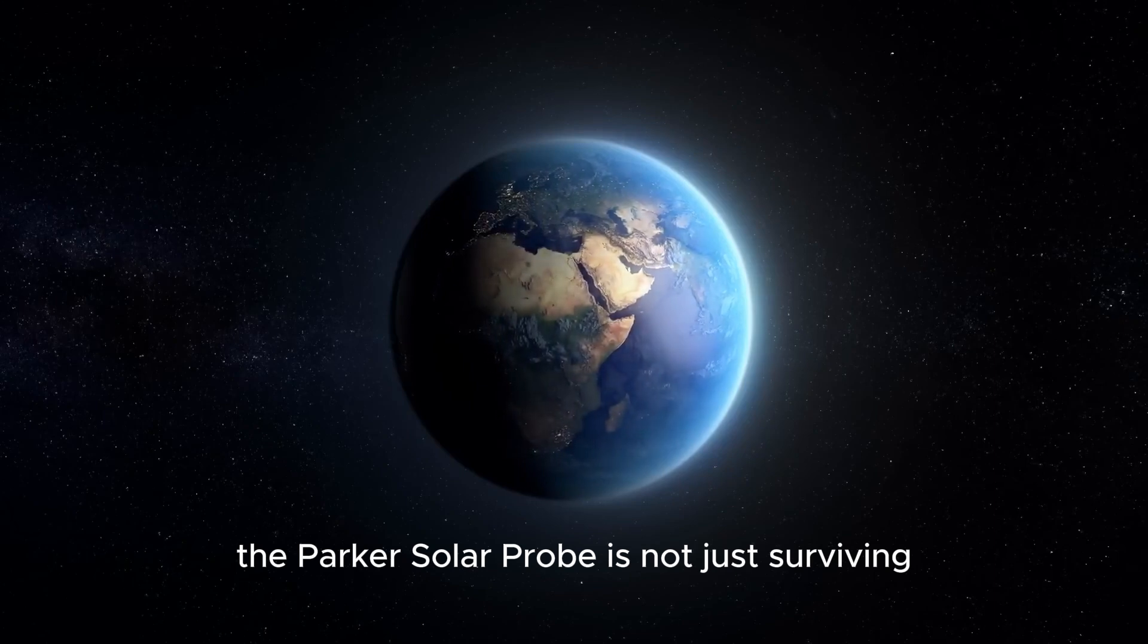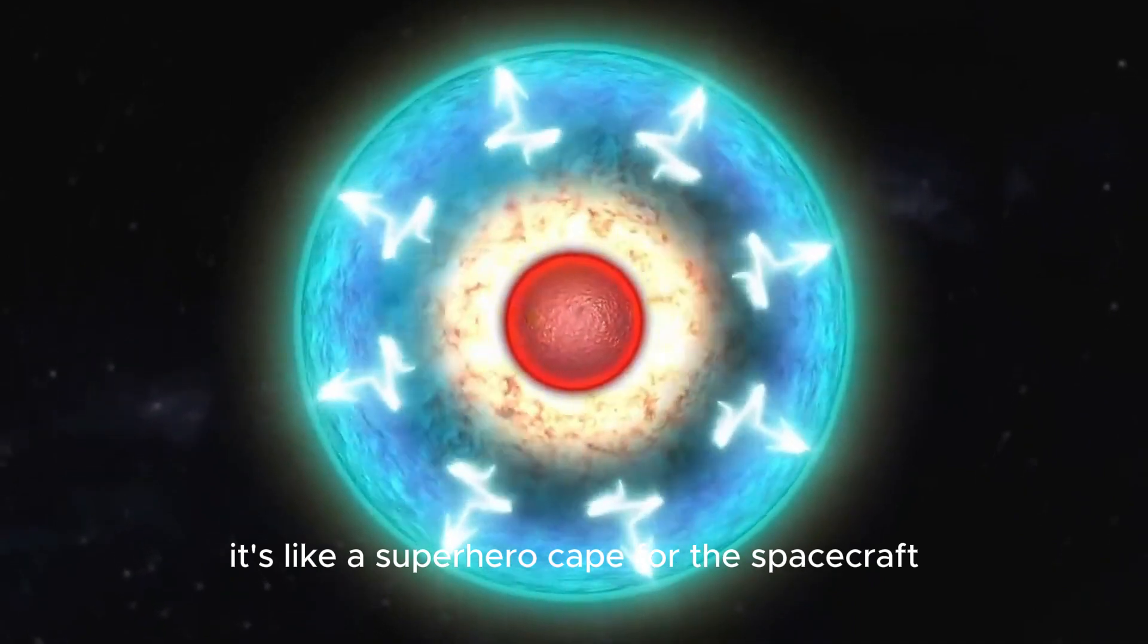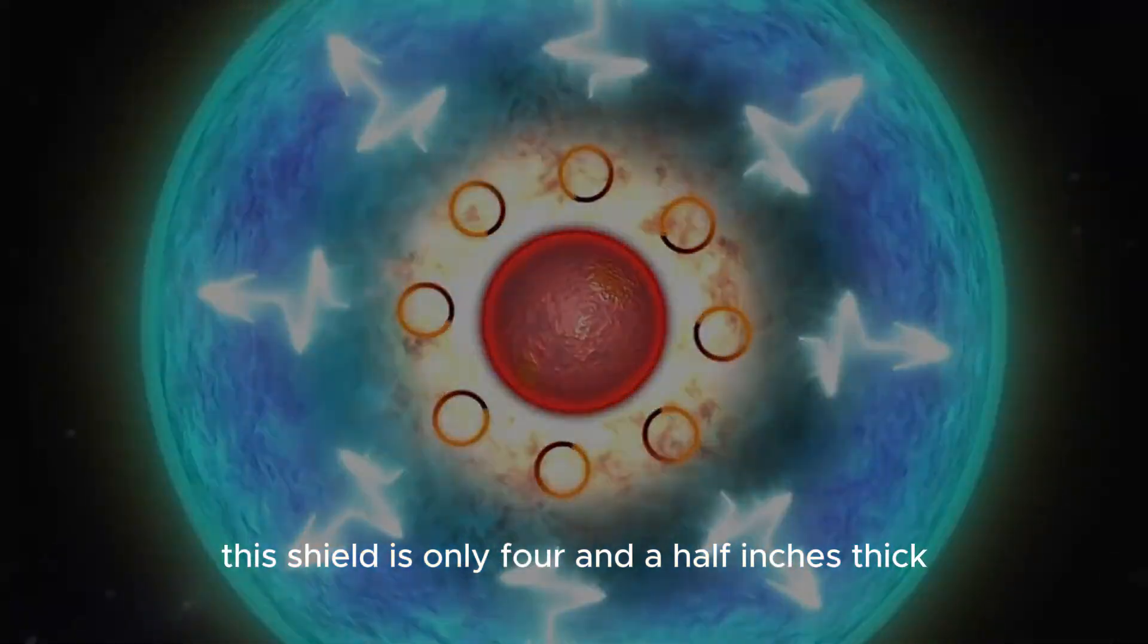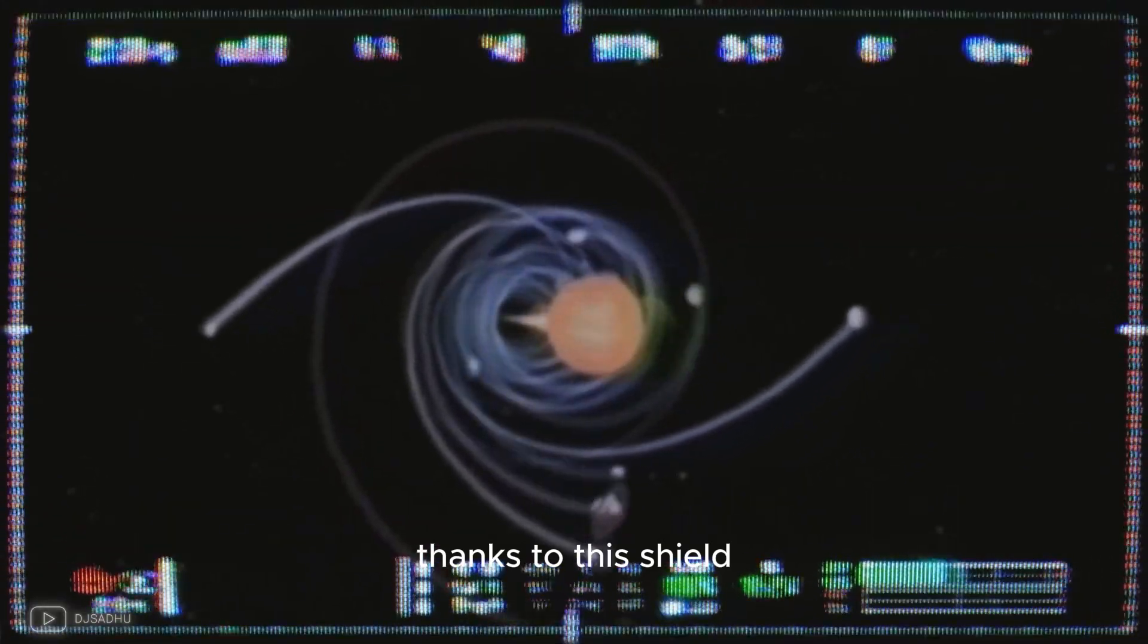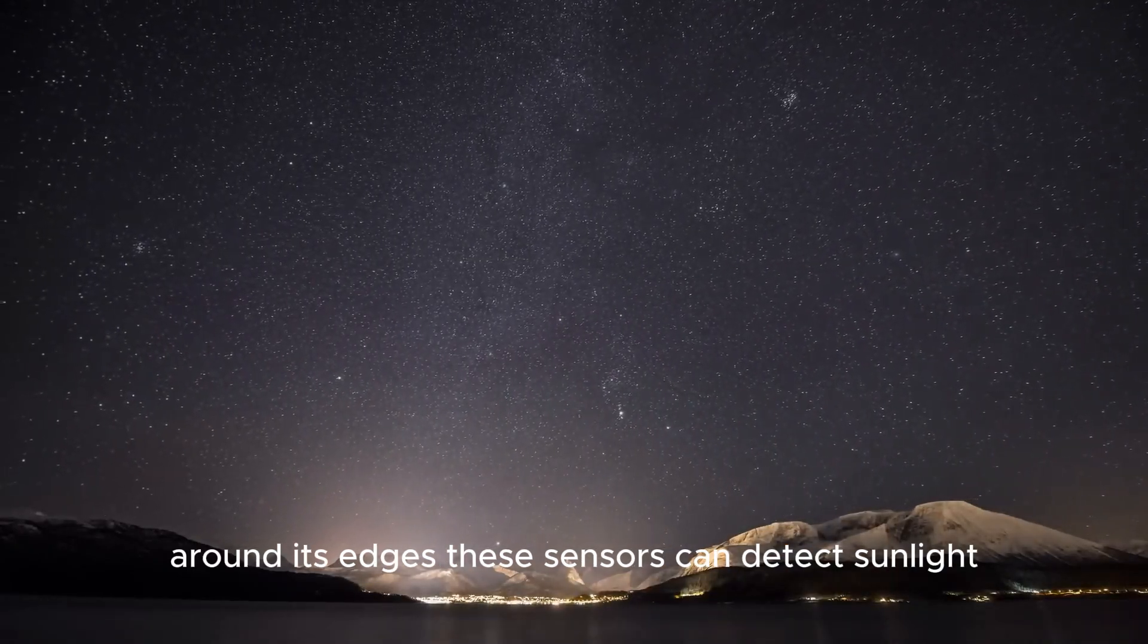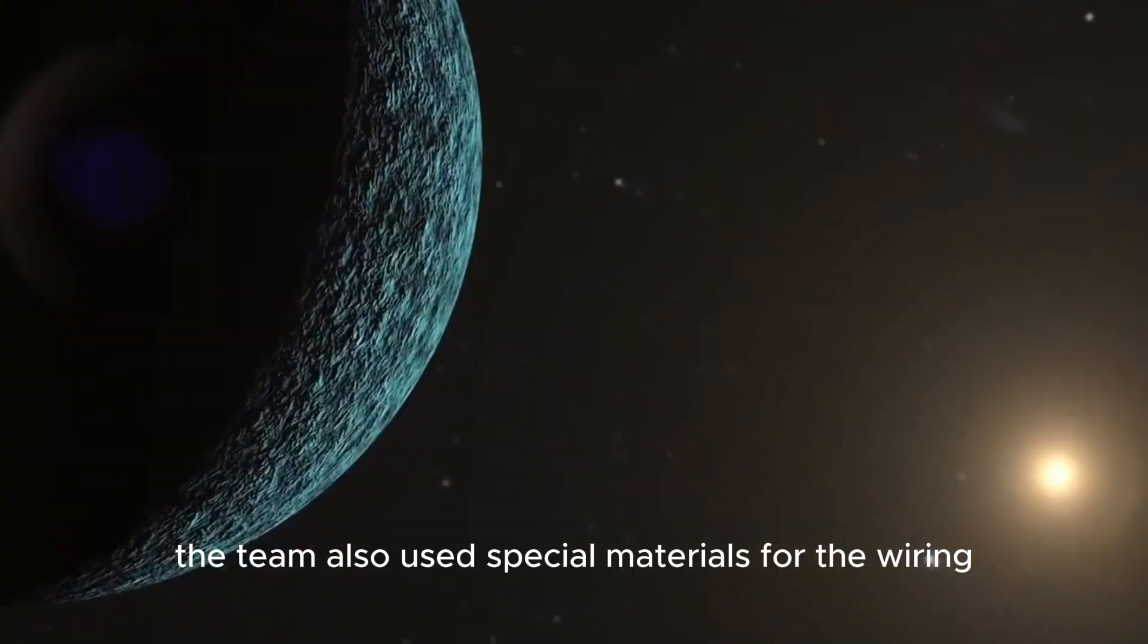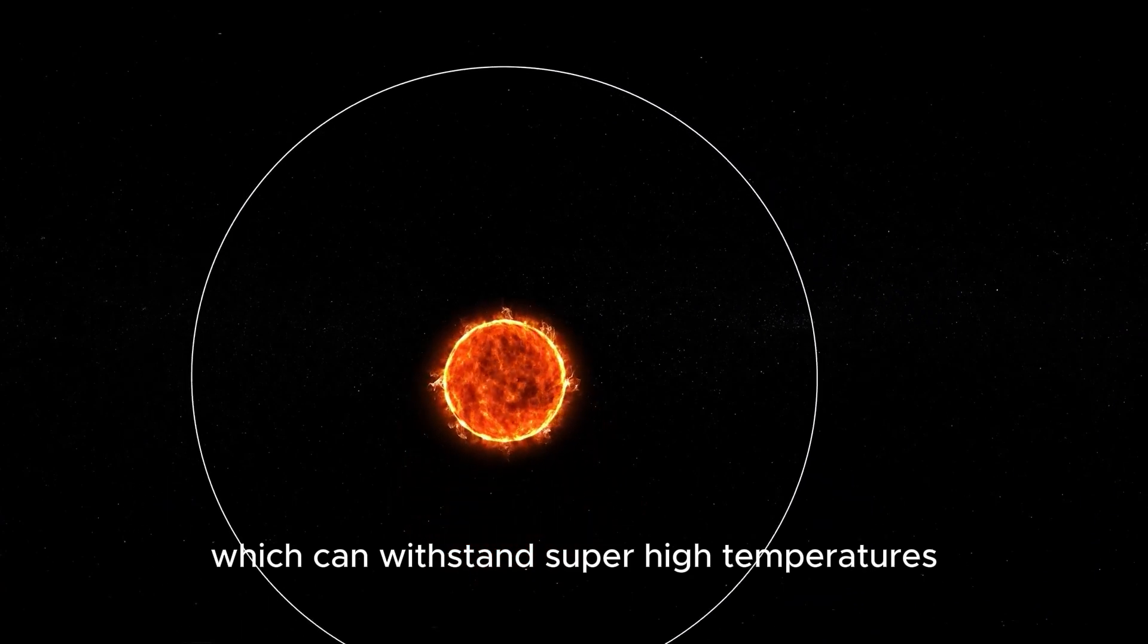The Parker Solar Probe is not just surviving but thriving while it studies the sun. Let's talk about the heat shield. It's like a superhero cape for the spacecraft. Made of special composite foam between two carbon plates, this shield is only four and a half inches thick but can handle temperatures up to 1650 degrees Celsius. Thanks to this shield, the probe can keep its own temperature at a comfy 30 degrees Celsius. The heat shield has seven smart sensors around its edges. These sensors can detect sunlight and tell the spacecraft's computer to adjust its position. This helps keep the probe safe from the sun's intense heat and radiation. The team also used special materials for the wiring. They suspended it in sapphire crystal tubes and used niobium wires, which can withstand super high temperatures.